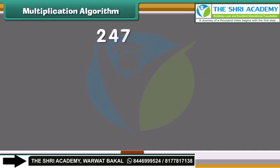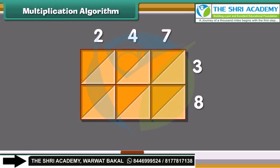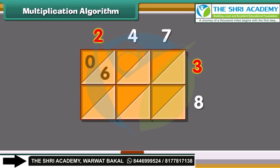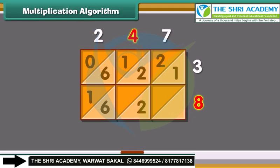Now we will multiply 247 and 38 using the lattice algorithm. We multiply the numbers one by one and write answers in the box — 10's in the upper box and 1's in the lower box. First, multiply 2 and 3: the answer is 6. Then multiply 4 by 3: 4 threes are 12. Now 7 threes are 21. Similarly, 8 twos are 16; 8 fours are 32; and 8 sevens are 56.